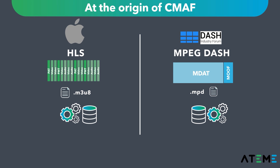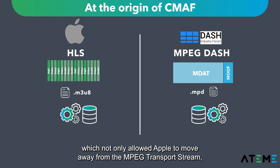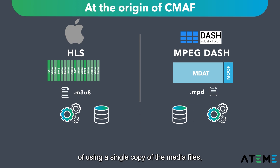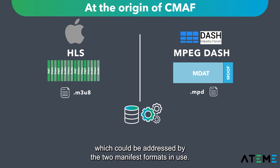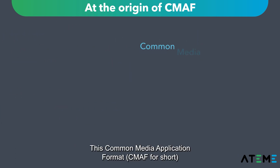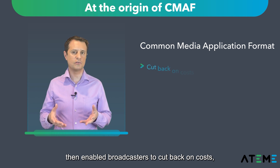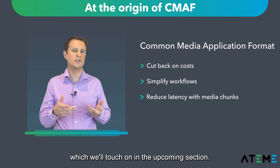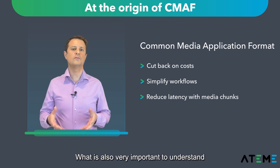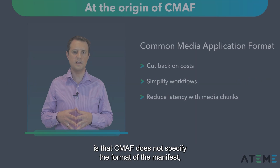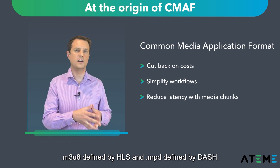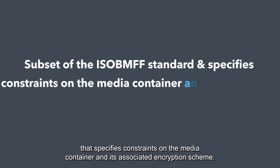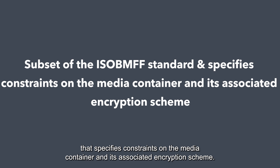Then a common media format came along, which not only allowed Apple to move away from the MPEG Transport Stream, but most importantly finally gave broadcasters the option of using a single copy of the media files, which could be addressed by the two manifest formats in use. This Common Media Application Format, or CMAF for short, enabled broadcasters to cut back on cost, simplify workflows, and reduce latency by using media chunks, which we'll touch on later. What is also very important to understand is that CMAF does not specify the format of the manifest — M3U8 defined by HLS and MPD defined by DASH. It is instead a subset of the ISO BMFF standards that specifies constraints of the media container and its associated encryption scheme.